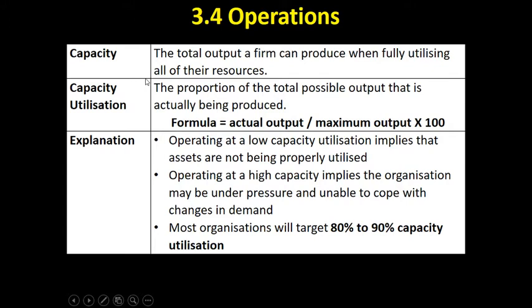What is capacity? Capacity is the total output a firm can produce when fully utilising all of their resources. In other words, a firm has got some assets — machinery, buildings, a labour force — and the capacity is the total amount of output that those factors of production can produce in a given period of time: maybe a day, a month, a year.